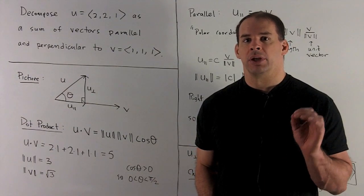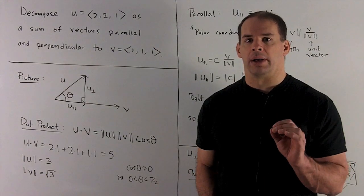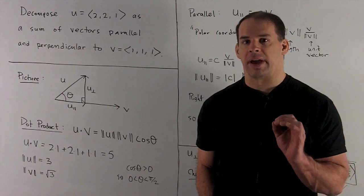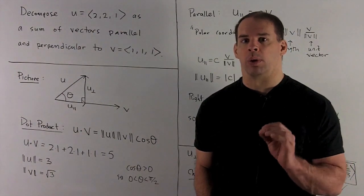Decompose the 3-vector u equal to (2, 2, 1) as a sum of vectors parallel and perpendicular to the vector v equals (1, 1, 1).